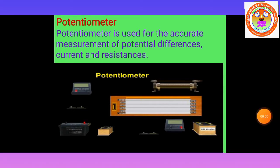In this picture, the apparatus used for the potentiometer experiment is given. This is a potentiometer, this is a rheostat, and here this is a high-resistance box.